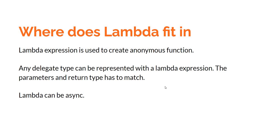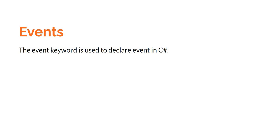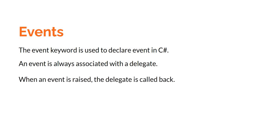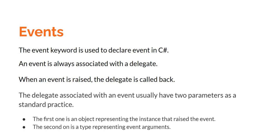The final thing for this discussion is Event. Events, as we all know, are triggered to invoke a function. The Event keyword is used to declare an event in C-Sharp. Unlike Delegate, which becomes like an enclosed type, Event is treated as an instance member — and that is a fundamental difference. An Event is always associated with a Delegate. When an Event is raised, the Delegate is called back — that's what essentially happens. When you raise an Event, you are basically invoking the Delegate.